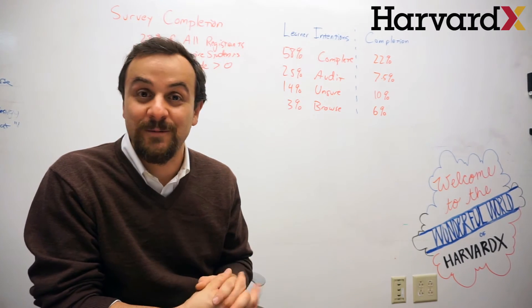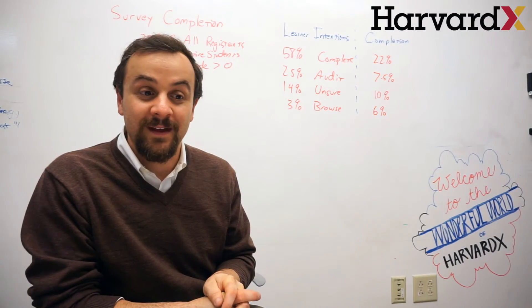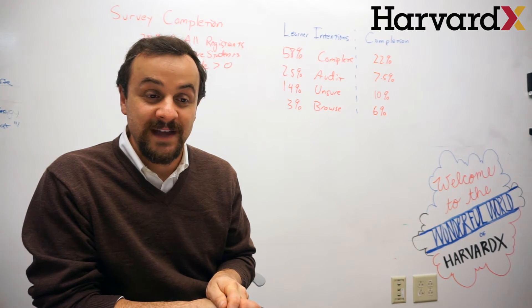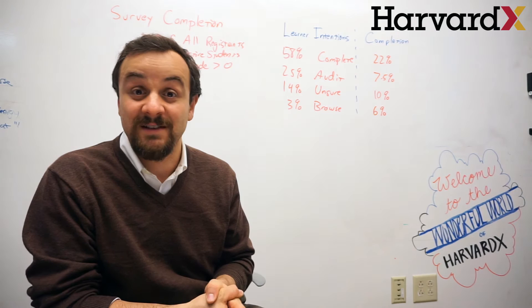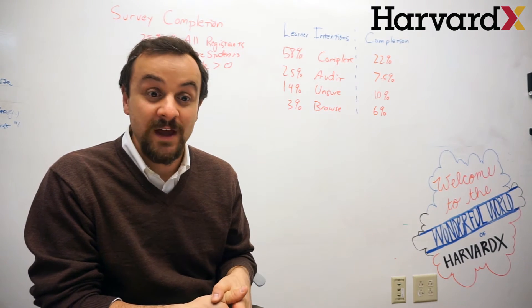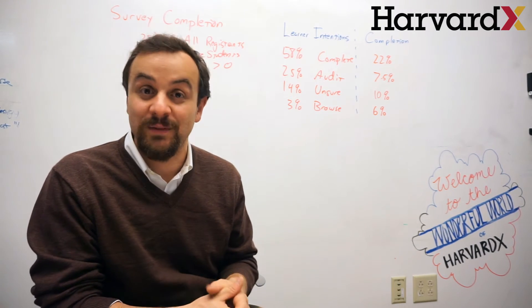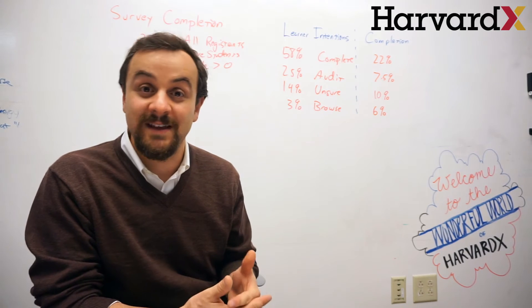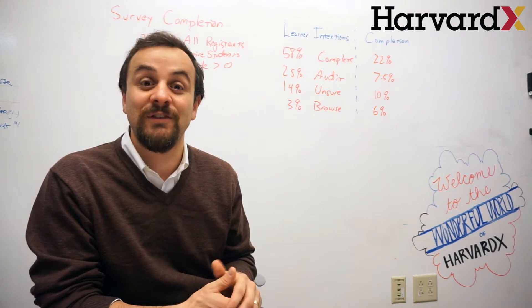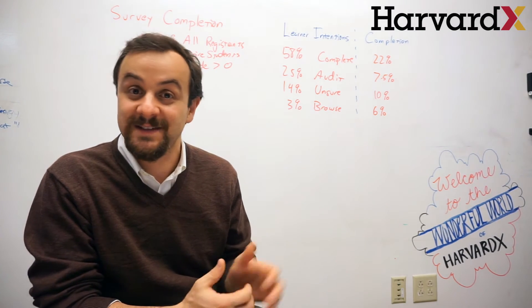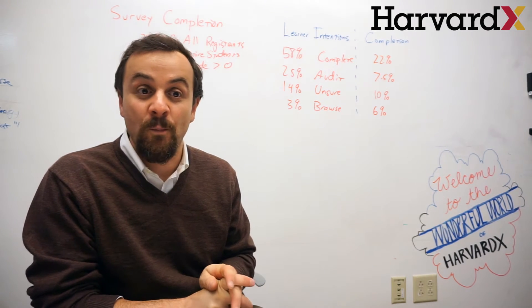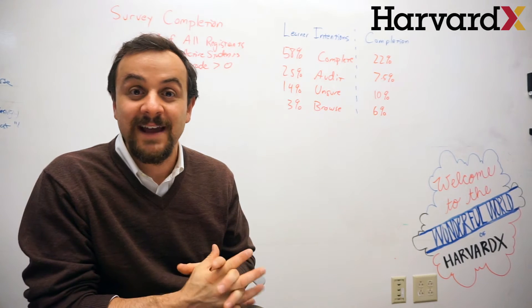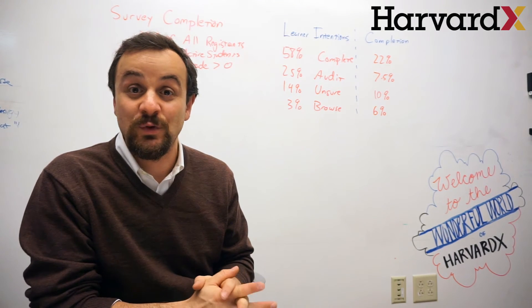One thing that is helpful in interpreting these numbers is recognizing that of these hundreds of thousands of people who are registering for courses, many of them never had any intention to complete the course. They came there to browse, to audit, to look around. They wanted to glance quickly at the syllabus and choose among a couple of competing courses. So it seemed that a better place to focus our analytic attention would be on those students who intended to complete the course.